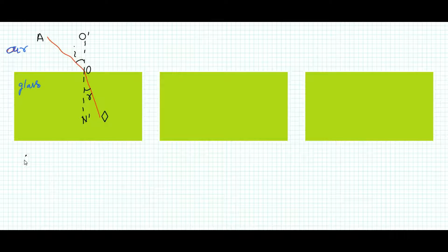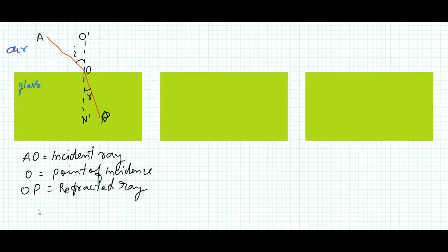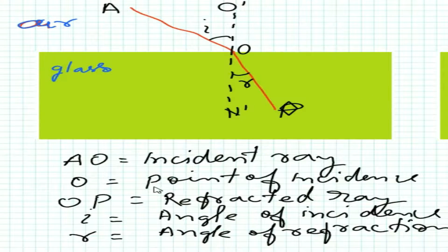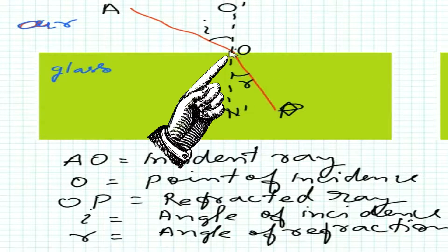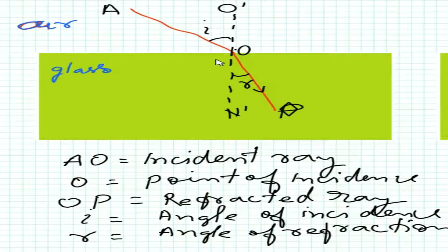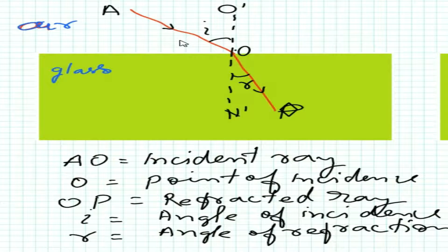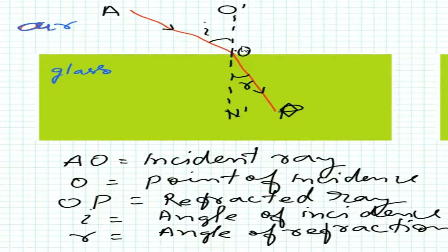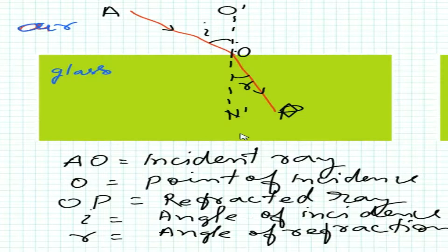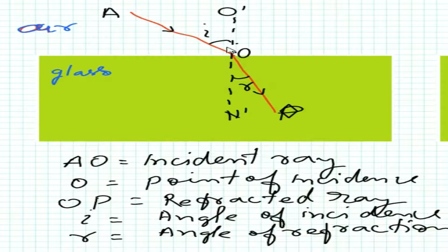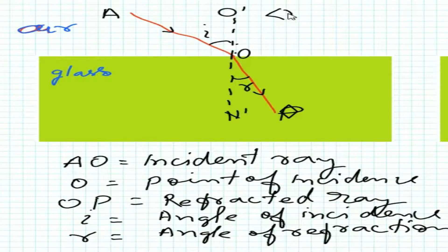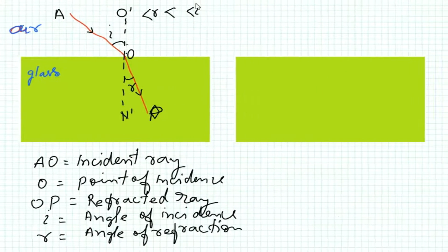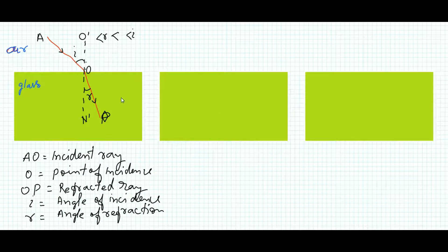In this case, AO is the incident ray, O is the point of incidence, and OP is the refracted ray — shown with an arrow to indicate the direction of travel. This angle is 90 degrees, and this is the angle of refraction. When light travels from a rare medium to a denser medium, the angle of refraction, angle r, is less than angle i.